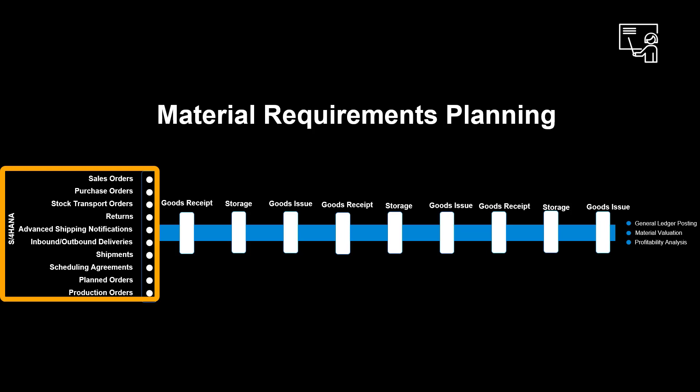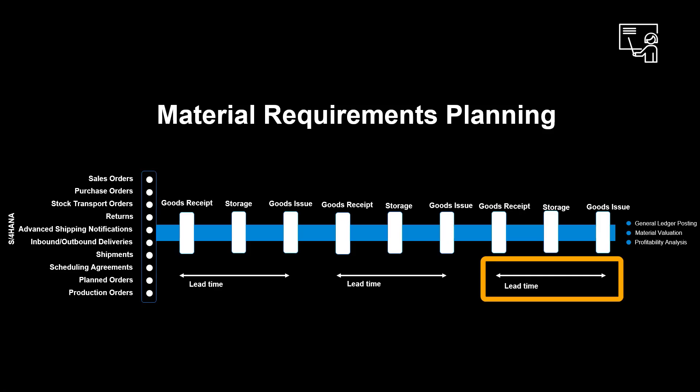Let's spend a little time on the concept. Material requirements planning takes all incoming and outgoing positions of each specific material into account. Each MRP element, listed to the left of the screen, is considered when planning future receipts and issues. Given that the planning is time-phased, it also takes different lead times into account.